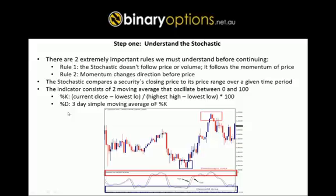Here's a naked chart of the US dollar Canadian dollar 50-minute time frame with the stochastic oscillator plugged in. As you can see, the oscillator fluctuates between 0 and 100, and we have two levels: the 20 level and the 80 level. An overbought condition is when the stochastic oscillator is fluctuating between 80 and 100, and an oversold condition is when it's fluctuating between 20 and 0.